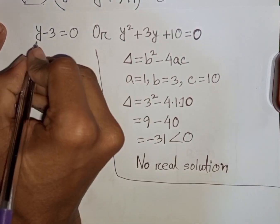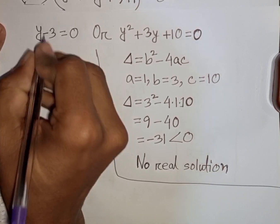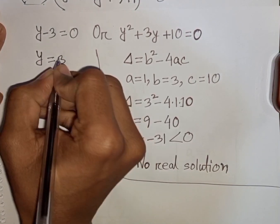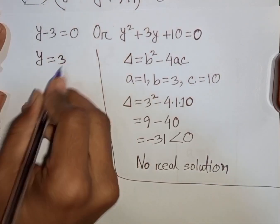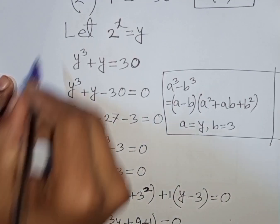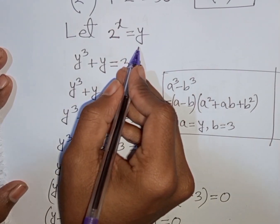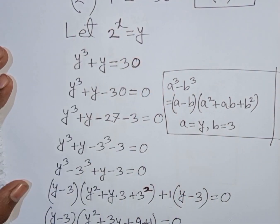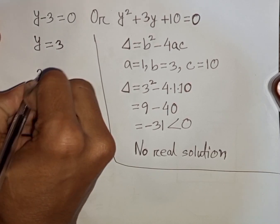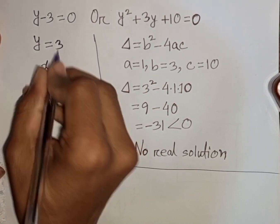From y minus 3 = 0, we move minus 3 to the right side, giving y = 3. Remember we let 2^x be substituted by y, so y means 2^x, which gives us 2^x = 3.